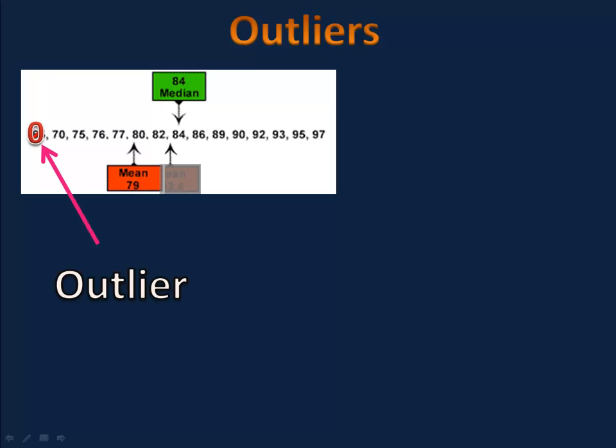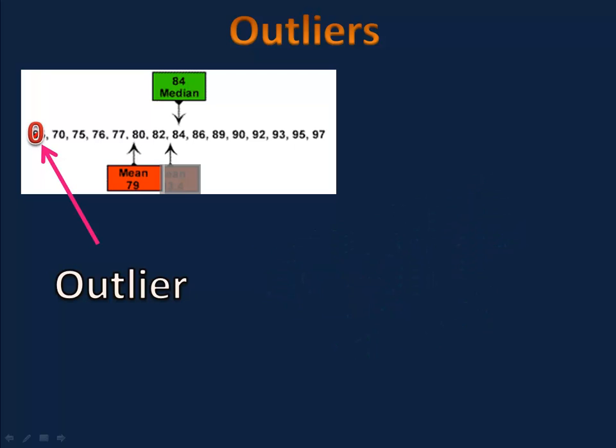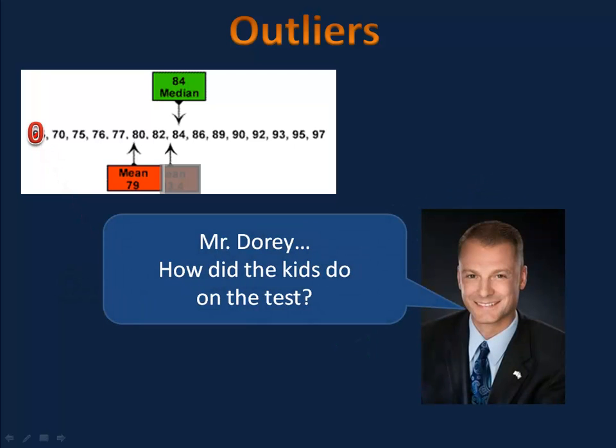That number 0 is called an outlier. It's called an outlier because it's pretty far from the other numbers that we're working with. All of the other numbers were from 70 to 97. 0 is pretty far away from all of those. It's kind of the oddball. If we have a situation where we have an outlier, well, we have to take that into consideration.